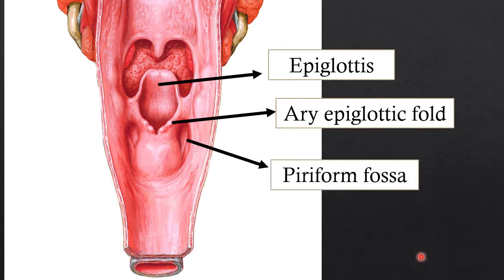The next structure is the piriform fossa — just lateral to the aryepiglottic fold you can identify the depression called the piriform fossa. They may put a probe in and ask you to write the boundaries of the piriform fossa. Remember the correct name is piriform fossa — not smuggler's fossa. You have to study the boundaries: medially the aryepiglottic fold, and laterally the surrounding structures.